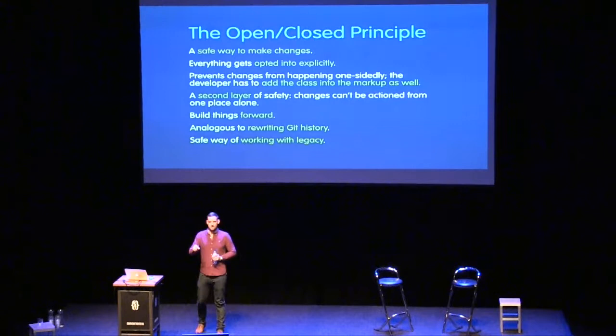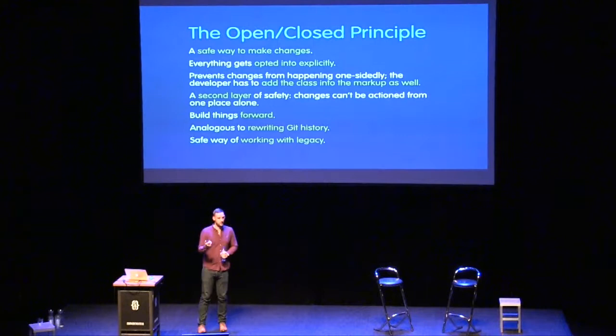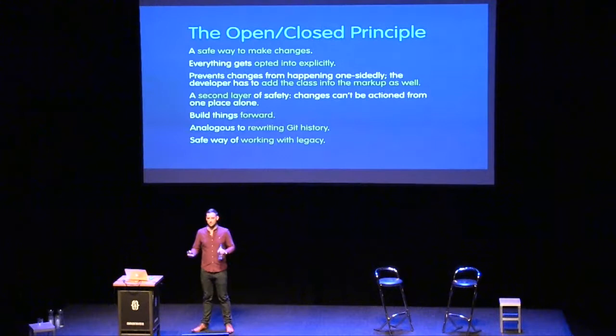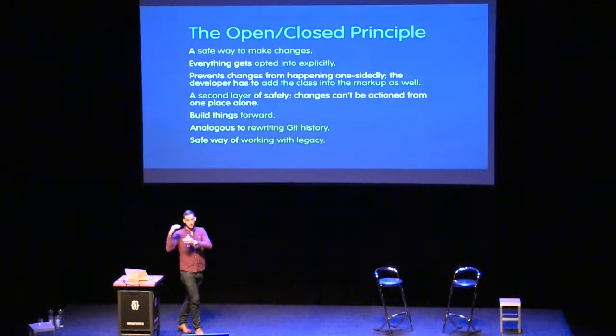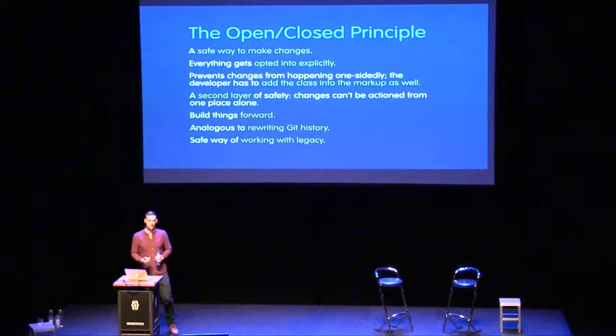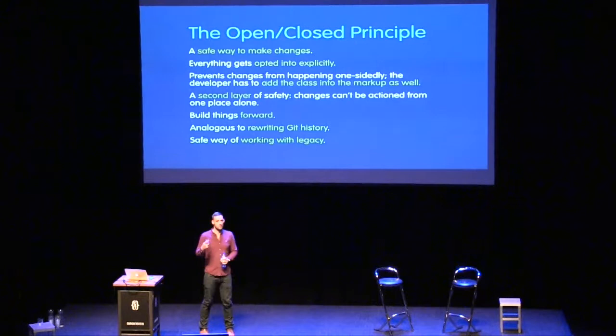This is a really safe way of working. If you open a CSS file, write `.promo .button`, hit save, refresh — the button gets larger. That's a one-sided change, made from CSS alone. But if you added a class of `button--large` to your CSS, hit save, refresh — nothing happens, because you also need to add that class to the markup. The Open/Closed Principle forces a two-sided change — a contract between HTML and CSS — completely eliminating the chance of regressions.